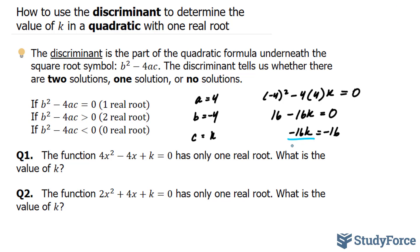Solving for k here, we divide both sides by -16, where we have k = 1. So in order for there to be one real root, our k value has to equal 1.